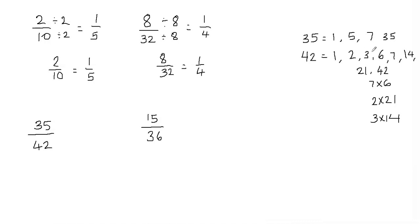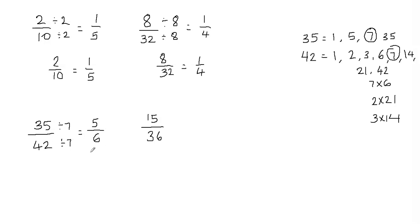Now we're looking for the largest number which is common in both. The largest factor common in both is 7. So the GCF of 35 and 42 is 7. That means I have to divide my numerator and the denominator by 7. 35 divided by 7 is 5, and 42 divided by 7 is 6. So I can reduce the fraction 35 over 42 to 5 sixths.